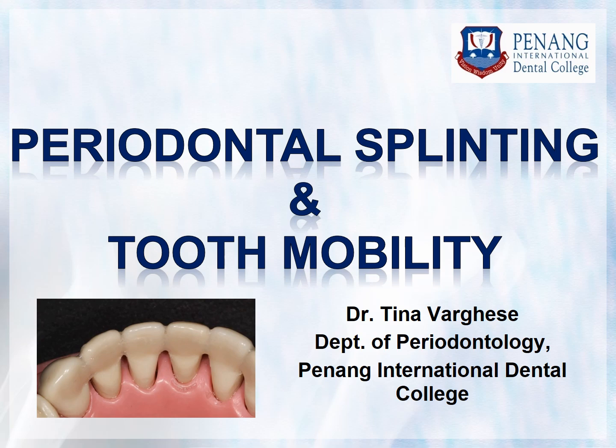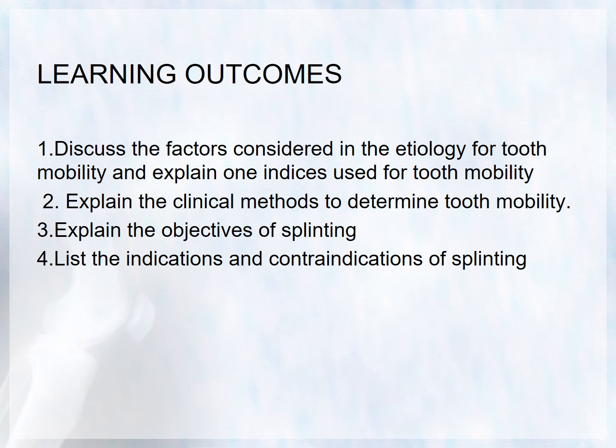Good morning to you all. Today's topic is periodontal splinting and tooth mobility. The learning outcomes are: discuss the factors considered in the etiology of tooth mobility, explain what index is used for tooth mobility, explain the clinical methods to determine tooth mobility, explain the objectives of splinting, and list the indications and contraindications of splinting.